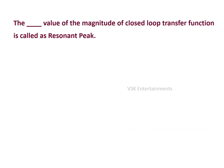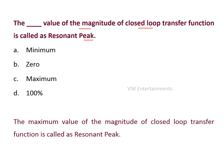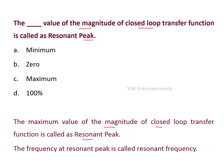Next question: the dash value of the magnitude of a closed-loop transfer function is called the resonant peak. Options are: minimum value, zero value, maximum value, 100% value. The maximum value of the magnitude of a closed-loop transfer function is called the resonant peak. The frequency at which the resonant peak occurs is called the resonant frequency. So option C is the right answer.